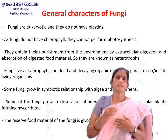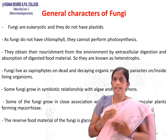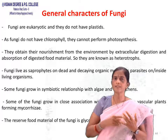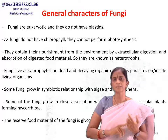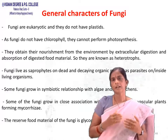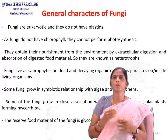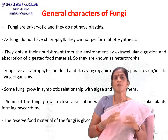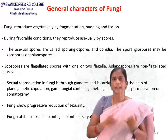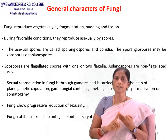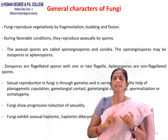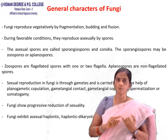Fungi are saprophytes — they depend on dead and decaying organic matter — or parasites inside or outside living organisms. Some fungi grow in symbiotic relation with algae forming lichens. Some grow in close association with roots of vascular plants forming mycorrhiza. The stored food material is glycogen. Fungi reproduce vegetatively by fragmentation, budding, and fission. During favorable conditions, they reproduce asexually by spores called sporangiospores and conidia.